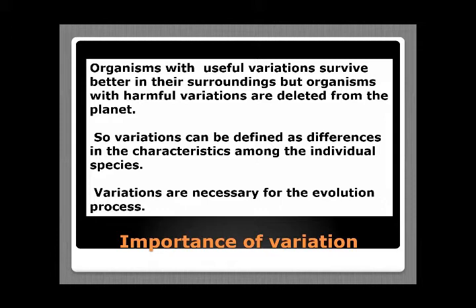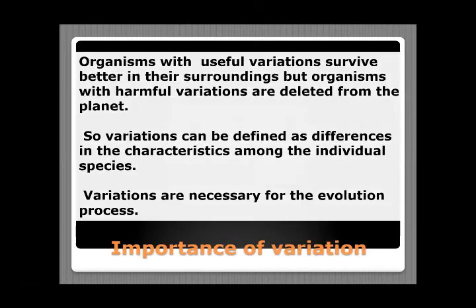These variations can be useful for a particular organism or they may be harmful. Organisms with harmful variations cannot survive for long and are eliminated by nature. On the other hand, organisms with useful variations can adapt better in their surroundings and are selected by nature. These variations are not only important for survival — they are also the basis of evolution. If variations are not present, the process of evolution cannot occur.